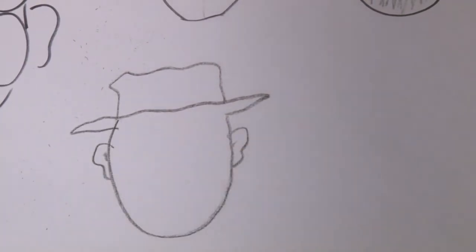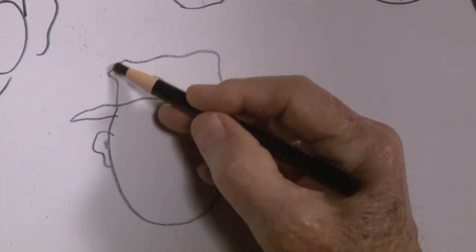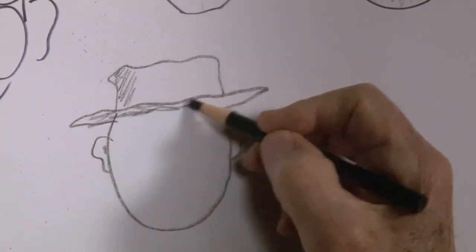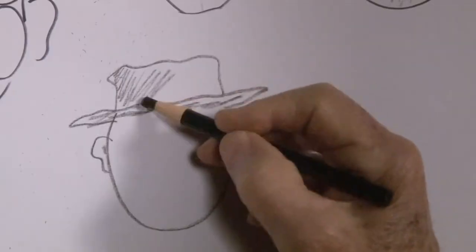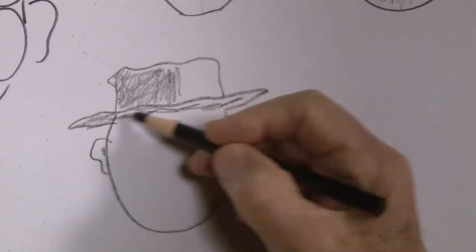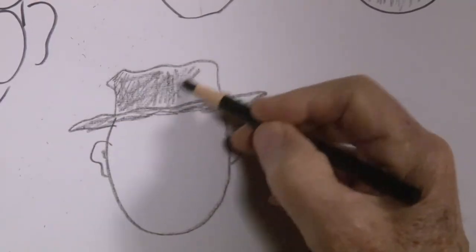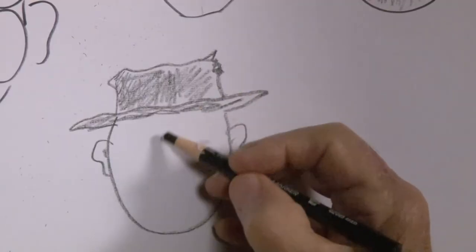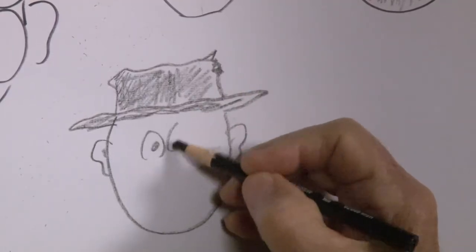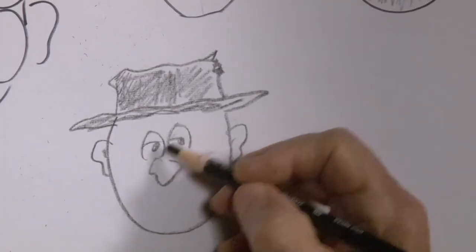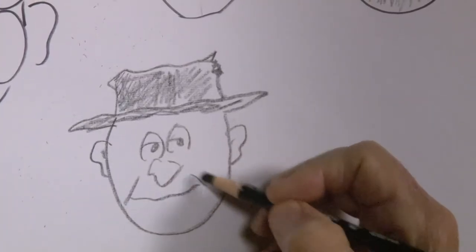Now, most cartoonists, when they're drawing a funny cartoon face, if they want to put a hat on, they don't want the hat to look all fashionable and neat. They like to have it kind of battered, maybe even torn a little bit. This fellow looks like he might be about ready to ride the rails.